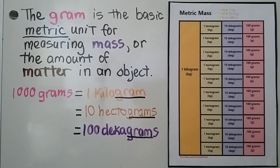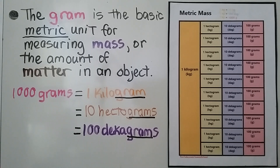The gram is the basic metric unit for measuring mass, or the amount of matter in an object. 1000 grams is equal to 1 kilogram. It's also equal to 10 hectograms and 100 decagrams.